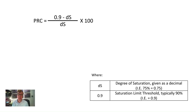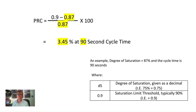A key metric used in determining capability to handle traffic flow is practical reserve capacity, or PRC for short. This is derived from degree of saturation and accounts for the 90% saturation limit threshold. The formula for PRC is: (saturation limit threshold as a decimal minus degree of saturation) divided by degree of saturation, multiplied by 100 to give a percentage. In the example, with degree of saturation of 87% and cycle time of 90 seconds, this equals 3.45% PRC for a 90-second cycle time.